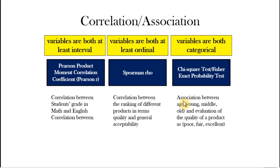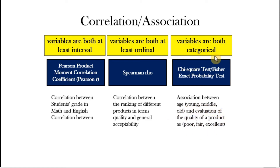For example, suppose we are associating age — categorized as young, middle, or old — with evaluation of product quality — poor, fair, or excellent. We are exploring whether younger people tend to rate the product excellent and older people rate it poor. Since both variables are categorical, we apply the chi-square test. These are the most basic correlation analyses; there are many others, but this presentation covers the fundamentals.